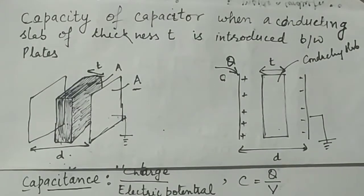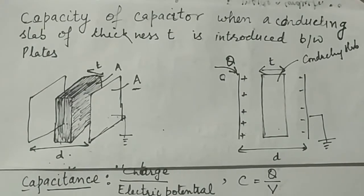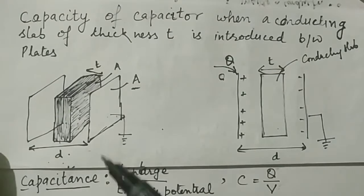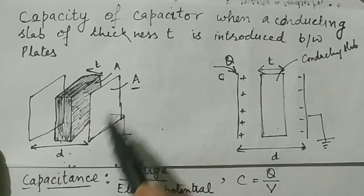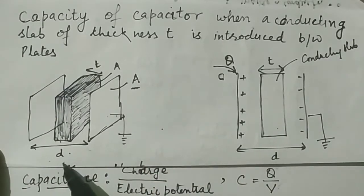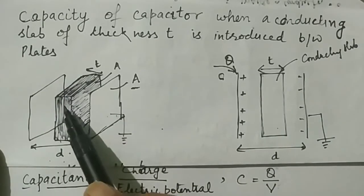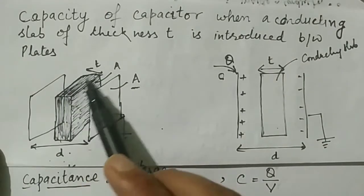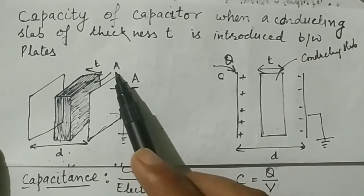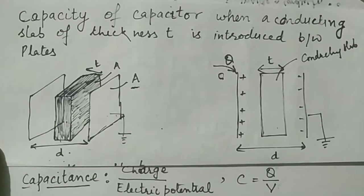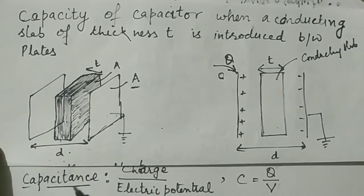In this video, we will discuss the capacity of a parallel plate capacitor when a conducting slab of thickness t is introduced between the plates. We have two parallel plates with area of cross section A, separated by distance d. A conducting slab of thickness t with the same area A is introduced between the plates, forming a parallel plate capacitor with a conducting slab.